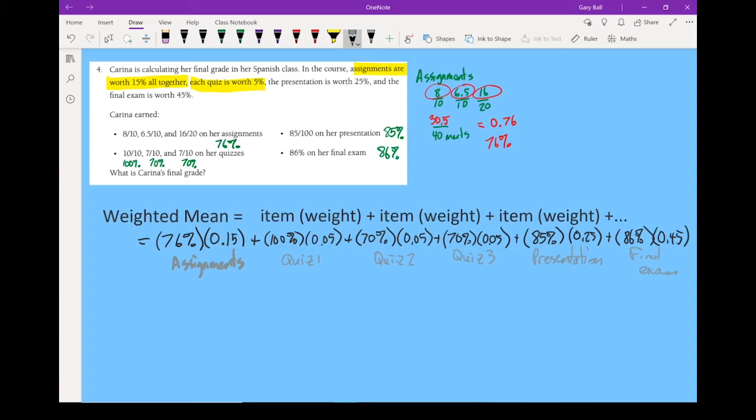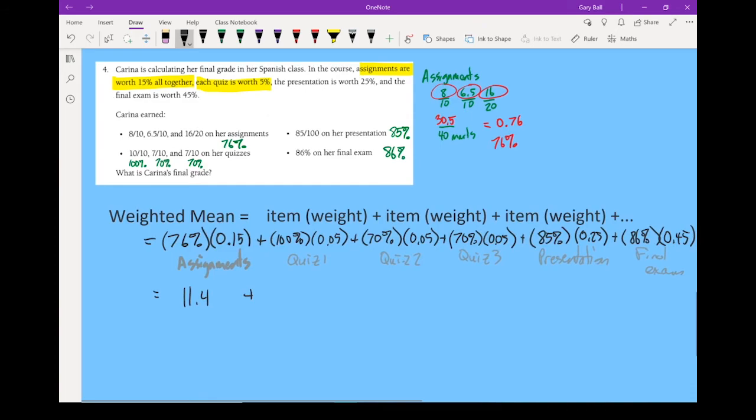All right. Let's start doing the math on these. 76% times 0.15 gives me 11.4. 100% times 0.05 gives me 5. This next one, when I multiply them together, I get 3.5. This one is 3.5. Presentation is worth a total of 21.25 marks. The final exam is worth 38.7.